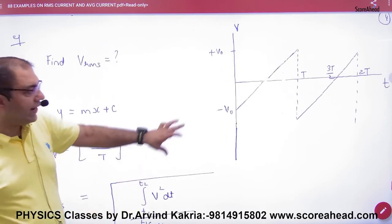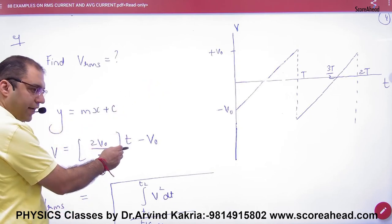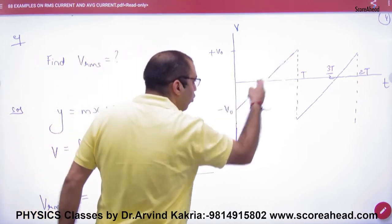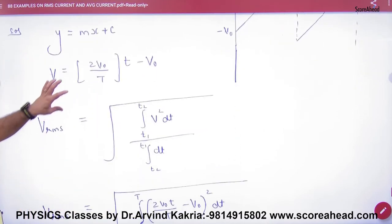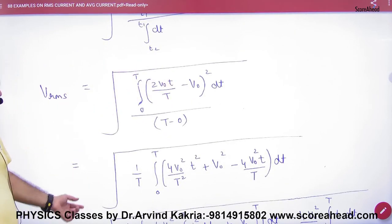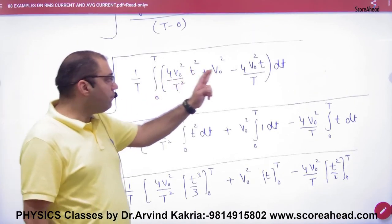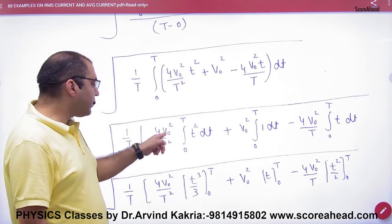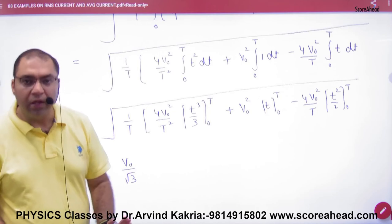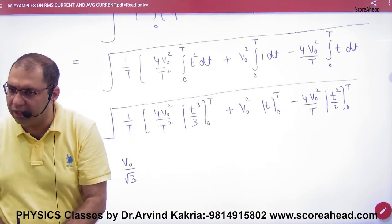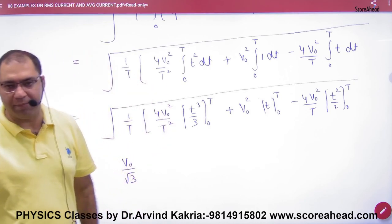Students will use straight line equation y = mx + c. Voltage is y-axis, time is x-axis. Intercept is -V0 and slope is 2V0/T. Substitute V here, whole square, then open it: A² + B² - 2AB divided by T. Break integration of first term, second term, third term. Put T³/3, T²/2 values and answer will come.